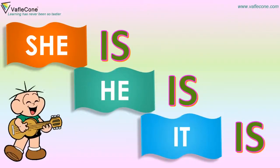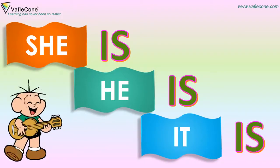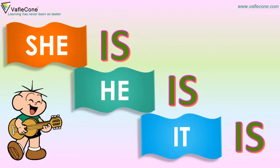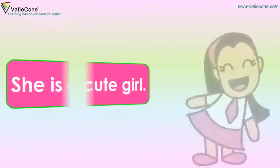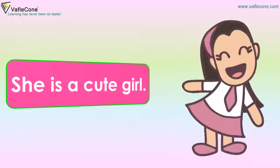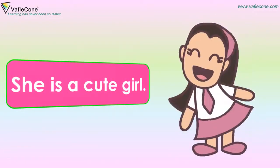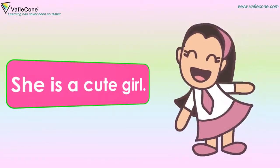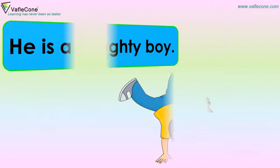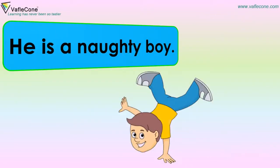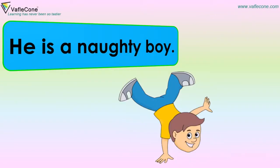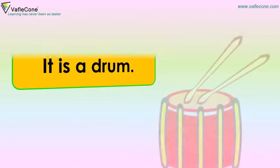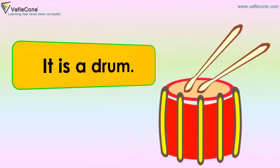Now let's look at the sentences. She is a cute girl. He is a naughty boy. It is a drum.